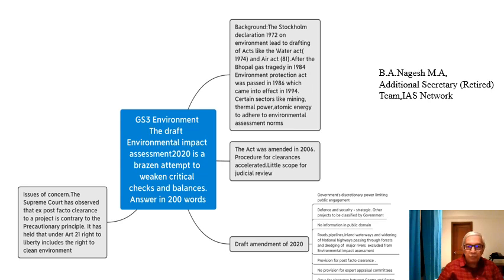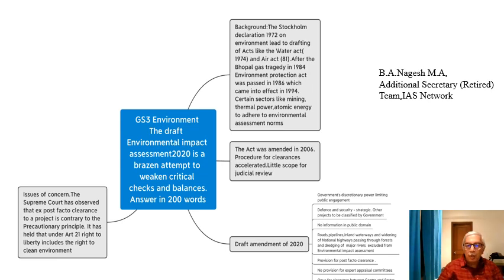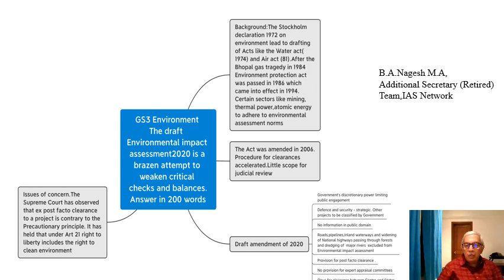One more feature of this draft amendment: building projects of 1,50,000 square meters are exempt from environmental impact assessment. Regarding post-facto clearance, when a company goes ahead with the work and then applies for clearance, it has to submit a plan for remediation — that is, if any defects are pointed out by the government, they must be rectified. There is also a provision for a minor penalty.